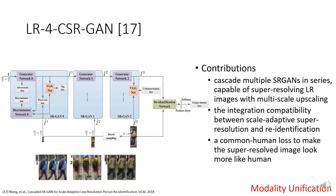The fourth work is our work in EJCA 2018, which also exploits a modality unification strategy. We cascade multiple SR-GANs in series so that the network can enlarge images with different scales, supplementing image feature representation by plugging in a re-identification network. An end-to-end framework improves the integration between scale-adaptive super-resolution and re-identification, and consequently enhances the similarity of high-resolution and low-resolution pairs during the super-resolution process. Additionally, a perceptual human loss is designed to make super-resolution images look more realistic.